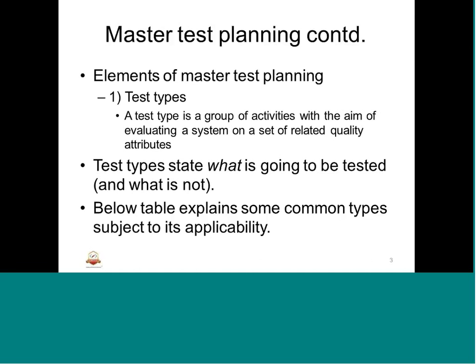Test types state what is going to be done, what is going to be tested, and what is not. For instance, a tester doing a functionality test will define who does what functionality and who handles performance-related tasks. The table below shows some of the test types based on applicability, which again depends on the complexity of the underlying embedded system.